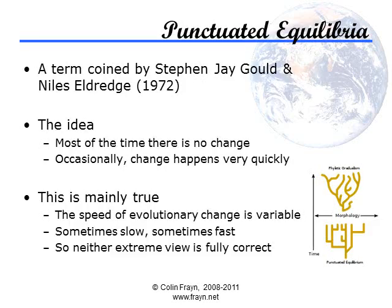The concept of punctuated equilibria was proposed in 1972 by Niles Eldridge and Stephen Jay Gould. This is the theory that the evolution of species does not necessarily proceed in a smooth, continuous manner, but that change happens rarely and rapidly, often after lengthy periods of neutral evolution where the dominant forms of each species don't change in any appreciable way. The theory is, of course, true in part.